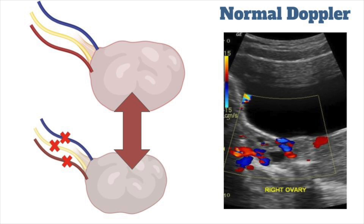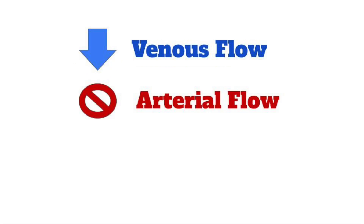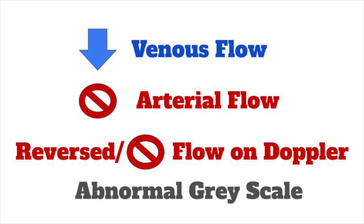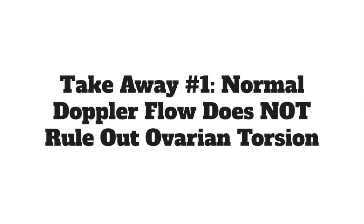Doppler findings can vary widely and can include decreased venous blood flow, which is a more common finding, absent arterial flow, reversed or absent vascular flow on Doppler, and abnormal grayscale appearance of the ovaries. However, normal arterial and venous flow may be found on ultrasound in up to one-third of patients with true torsion confirmed at the time of surgery. Arterial flow is normal in up to two-thirds of patients. Your first takeaway: you can't rely on normal Doppler flow to rule out torsion.